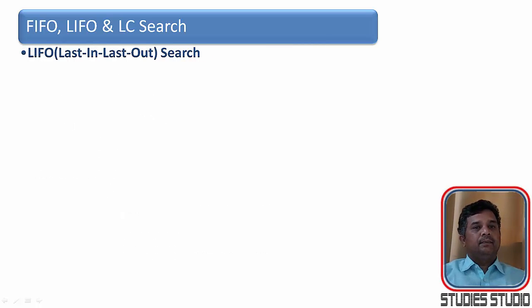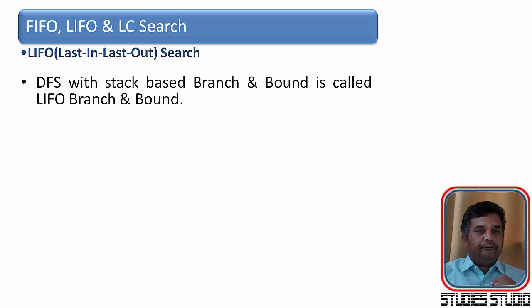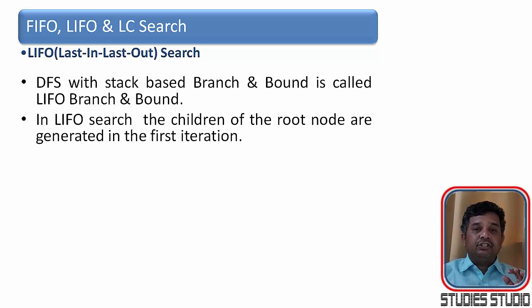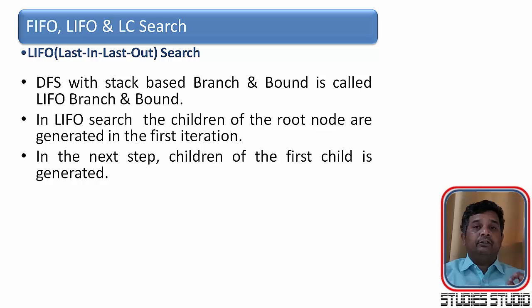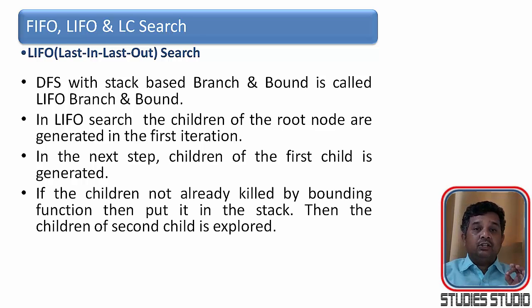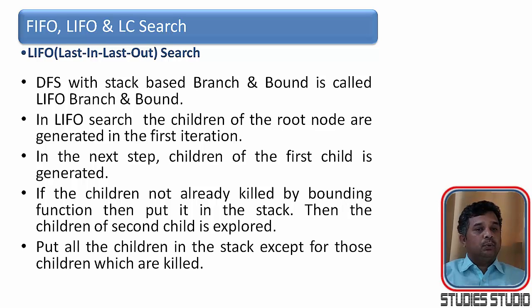So similarly, we will be having LIFO search or last in first out search. And for LIFO we use a stack data structure. And we use stack while traversing by depth first search. If a tree is given and we are traversing by depth first search, then obviously we are using last in first out search. So in LIFO search, the children of the root node are generated in the first iteration. In the next step, the children of the first child is generated. And if the child is not already killed by the bounding function, then put it into the stack. And the child of the second child node is explored. Put all the child in the stack except for those which are killed.